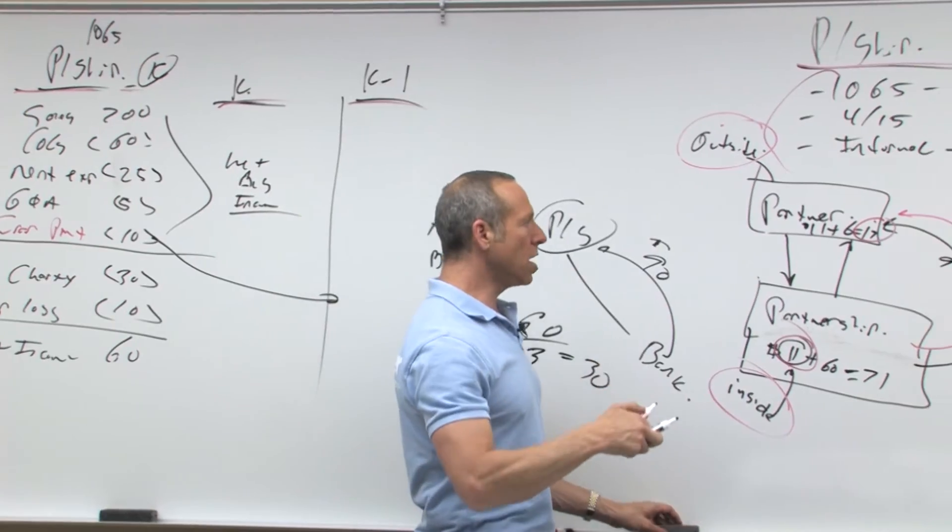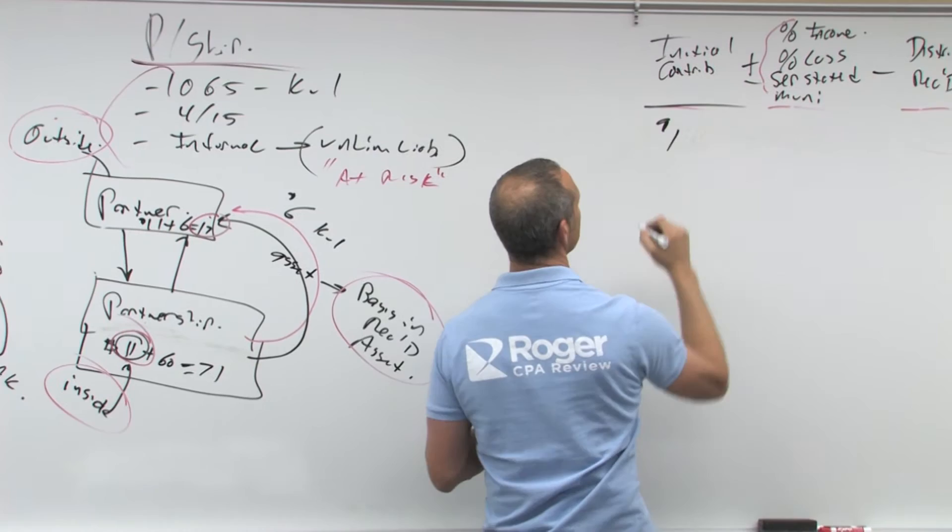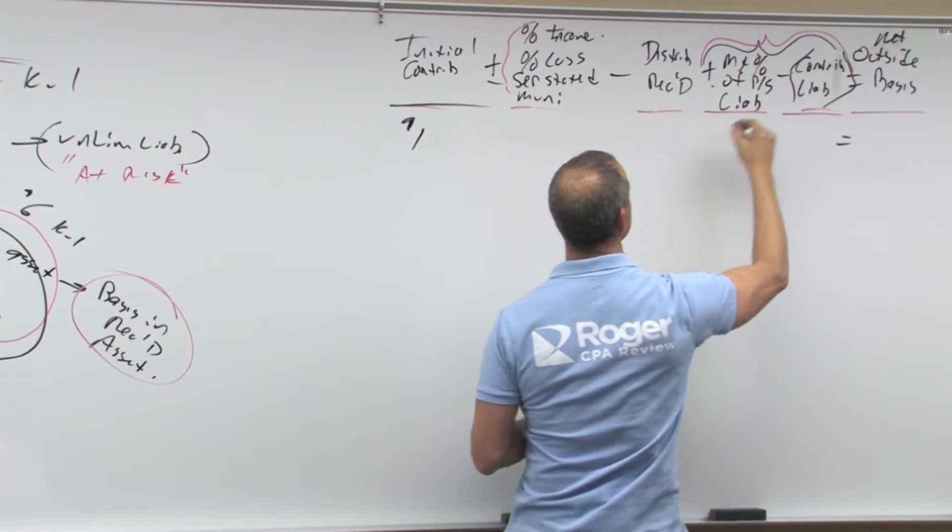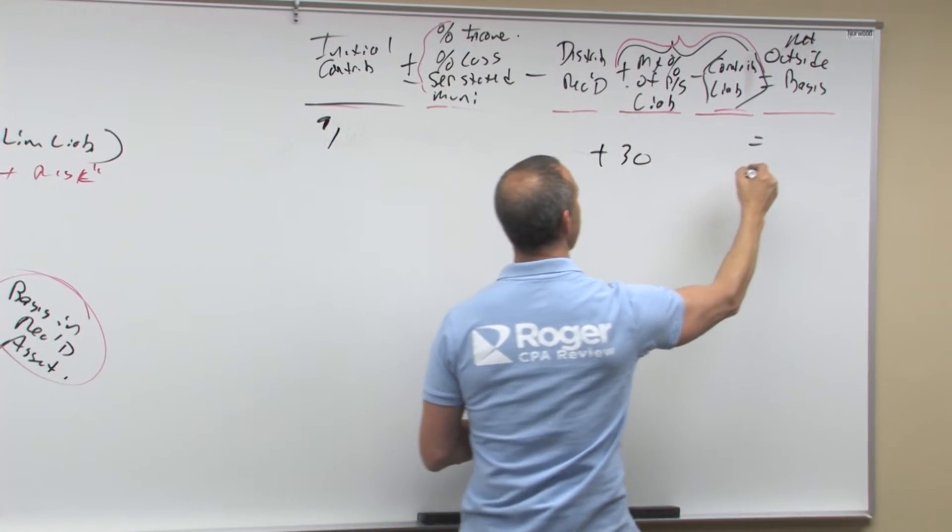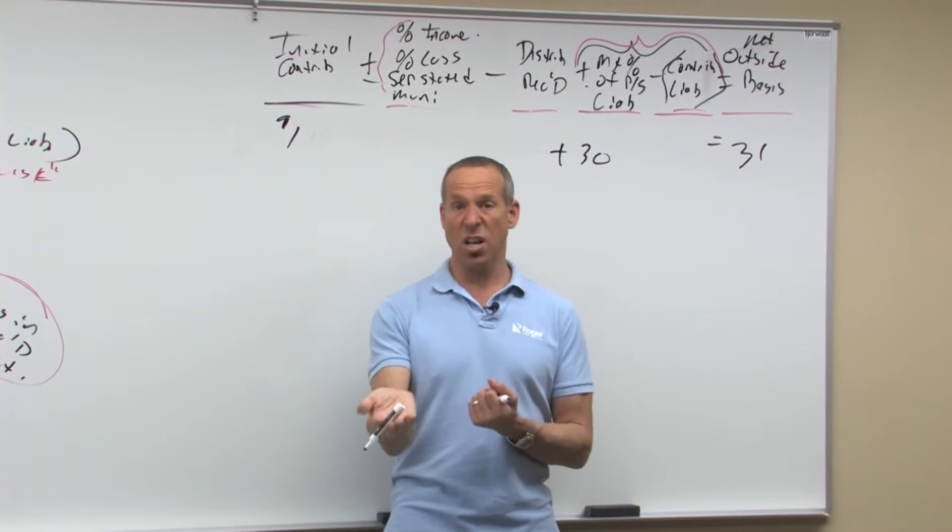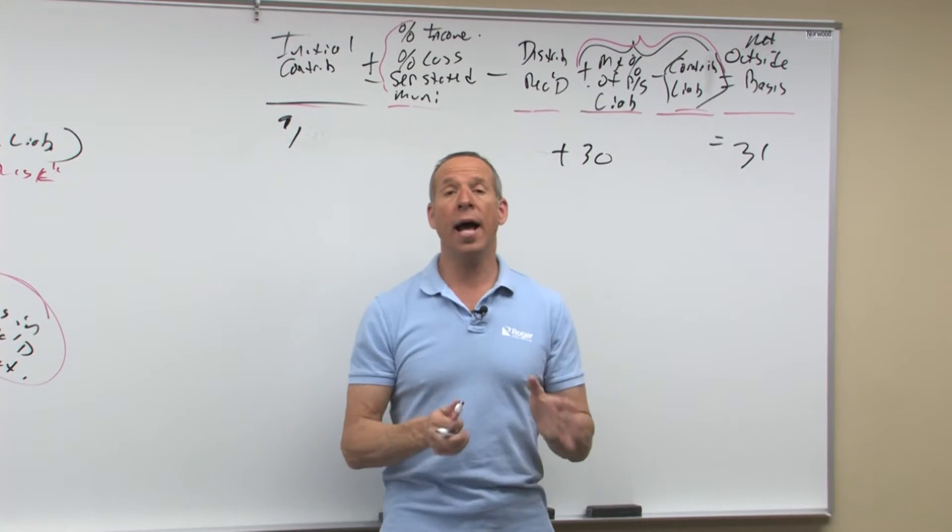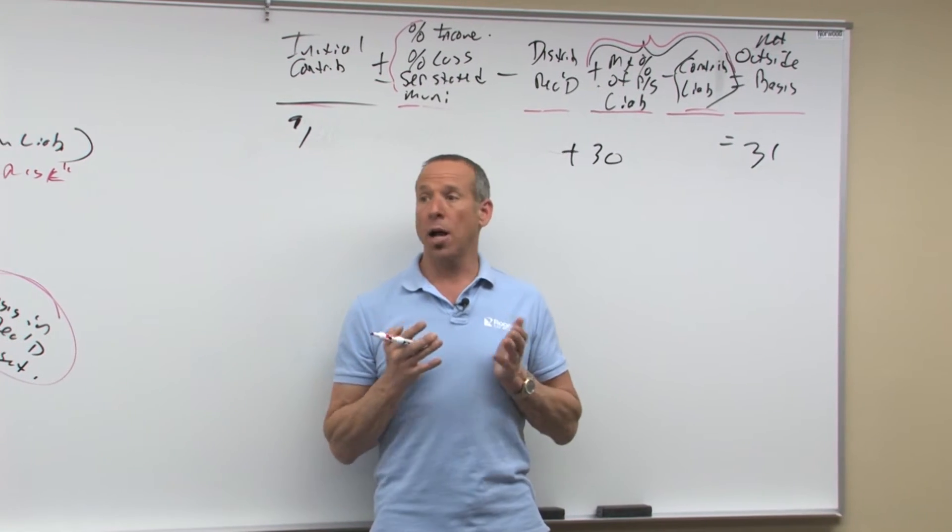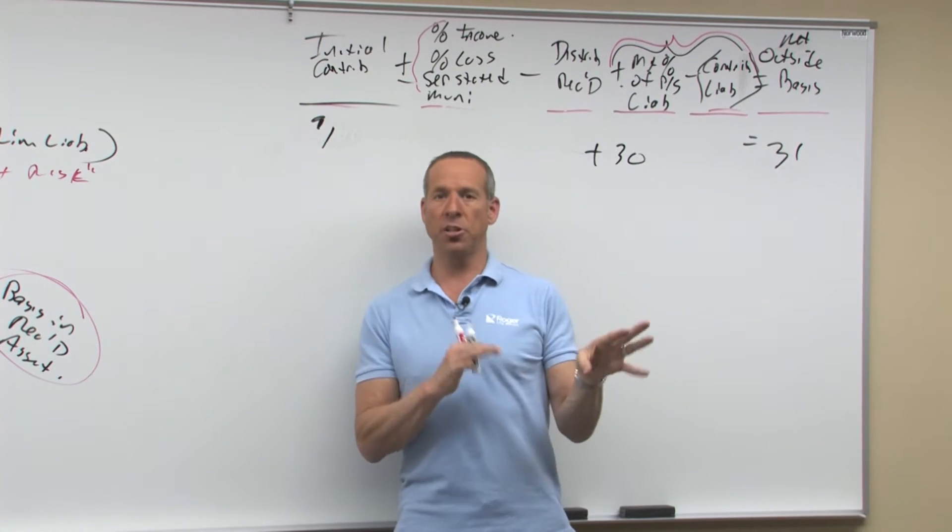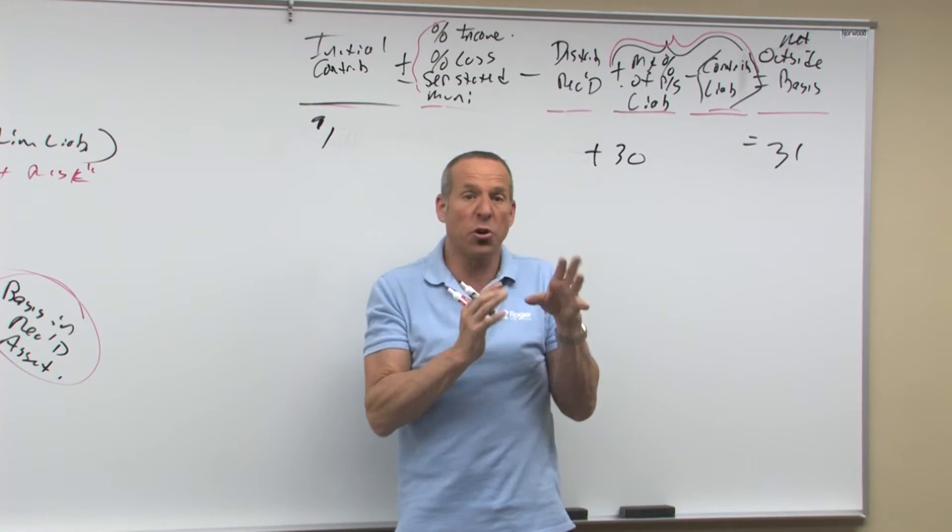If you come back over here, here's our initial contribution. Remember, we put in cash for a dollar. But we are at risk for my percent of the partnership debt is 30, my basis is 31. Why? Because I'm at risk for 31 bucks. I'm at risk, I can lose the dollar I put in, my basis, plus the at risk is 30.